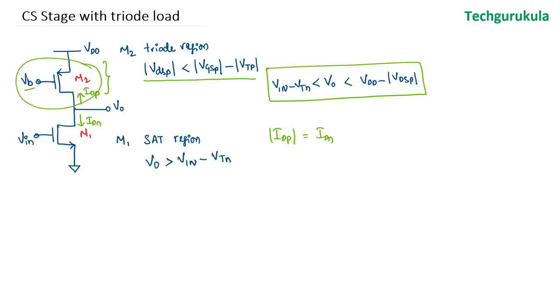Now let's see the small signal analysis of this common source stage. First let's look at the voltage gain. Now coming to the AC analysis, the DC sources should be made 0. So VDD should be made 0 and of course VB should also be made 0.